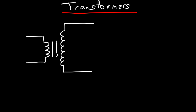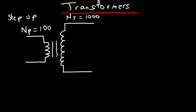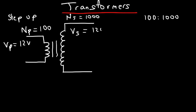If the right side has more coils than the left, this indicates a step-up transformer. For example, if the primary coil has 100 turns and the secondary coil has 1000 turns, and the primary voltage is 12 volts, the secondary voltage will be proportional to the number of coils. The ratio is 1000 divided by 100, which is 10, so the secondary voltage is 10 times higher: 120 volts.